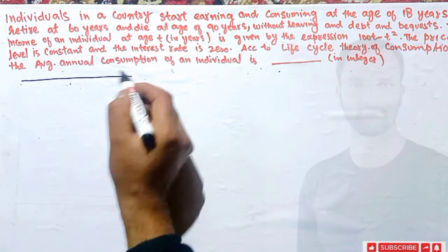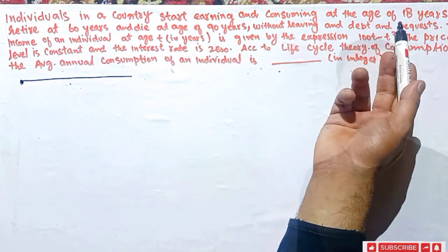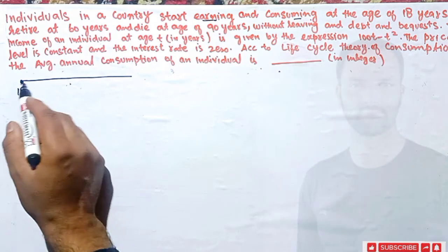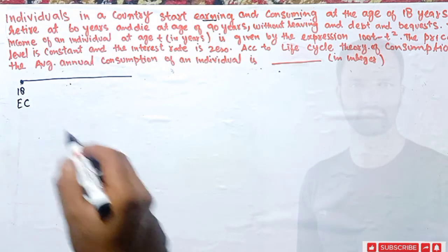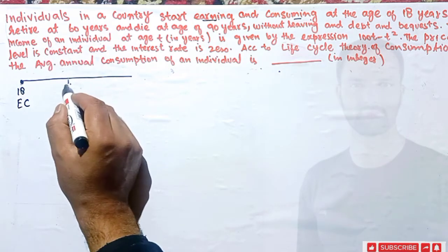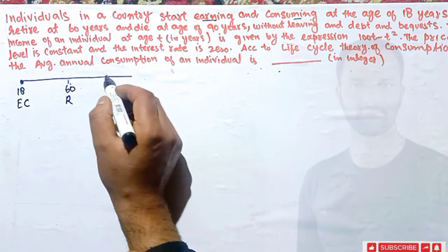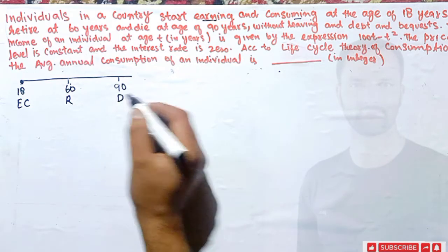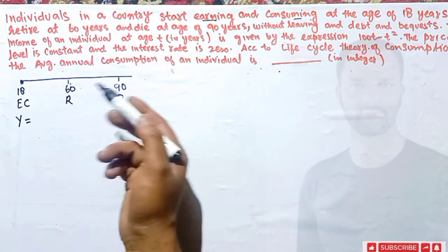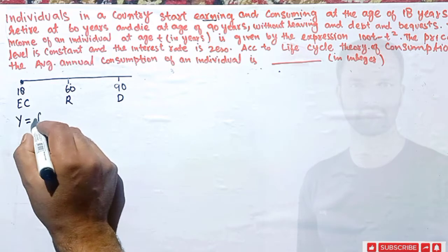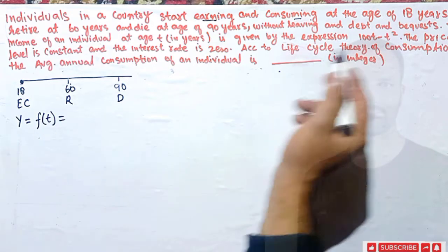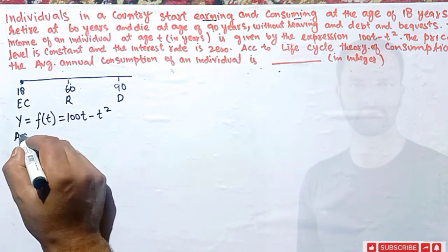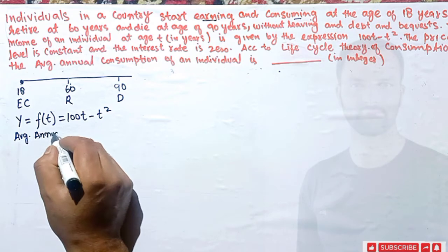Let me draw a timeline. Individuals start earning and consuming at age 18, they retire at age 60, and their life expectancy is 90 years. The income of the individual is a function of their age, given by the expression: income = 100t minus t squared. The price level is constant and the interest rate is zero. We need to find the average annual consumption.